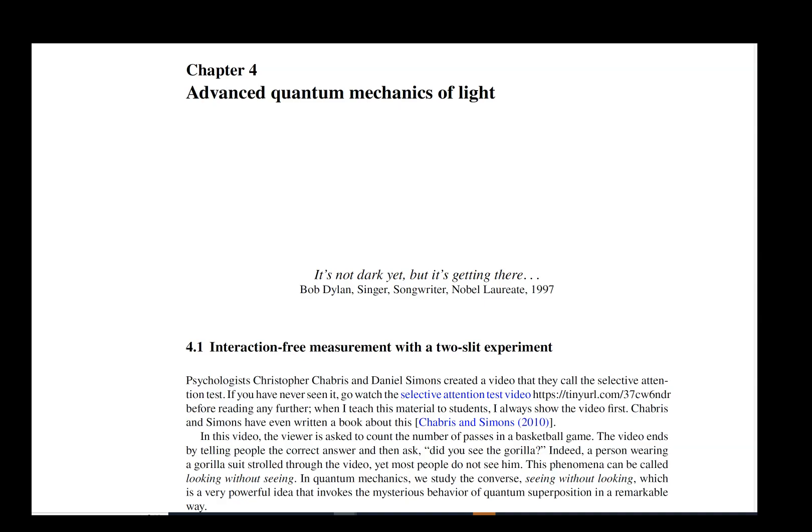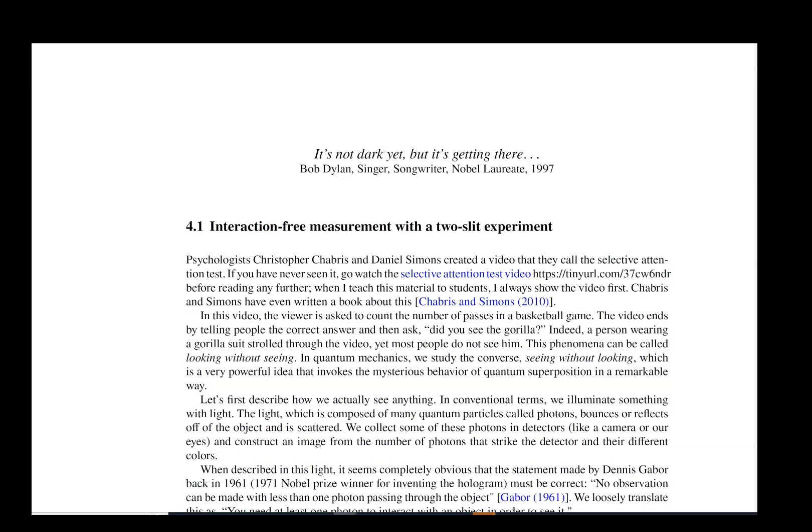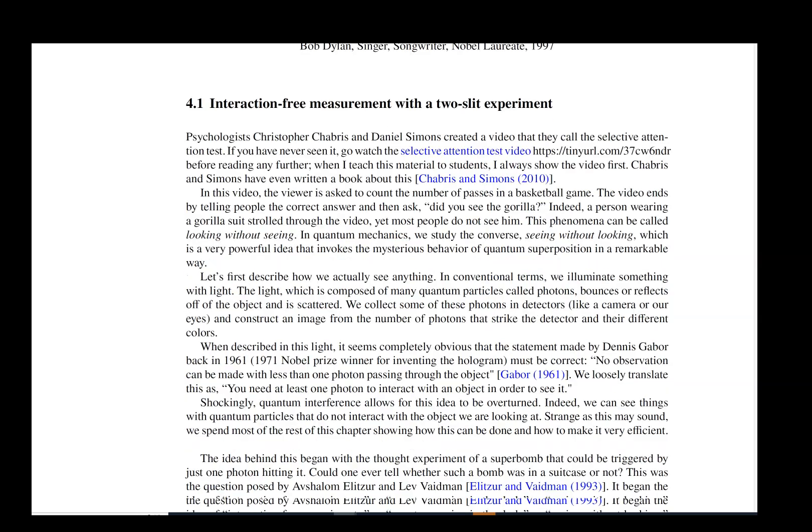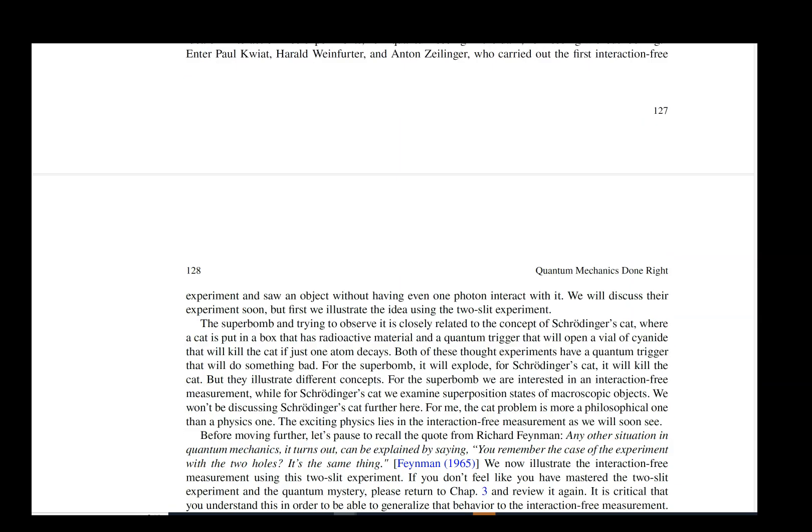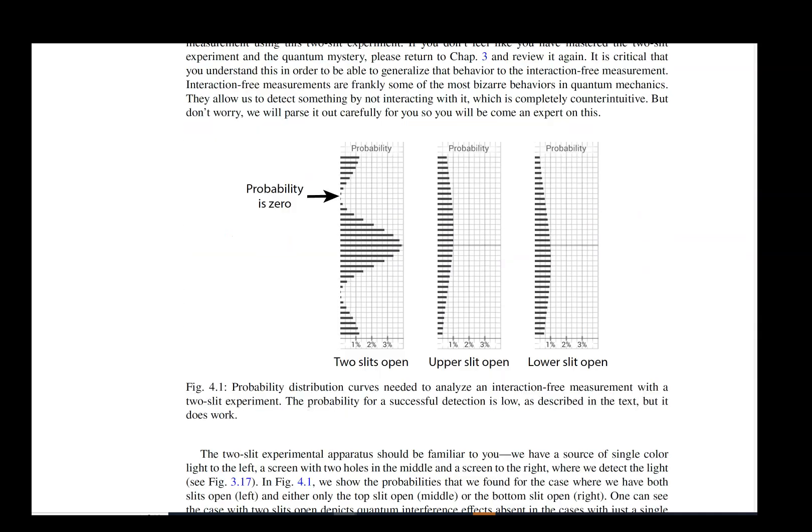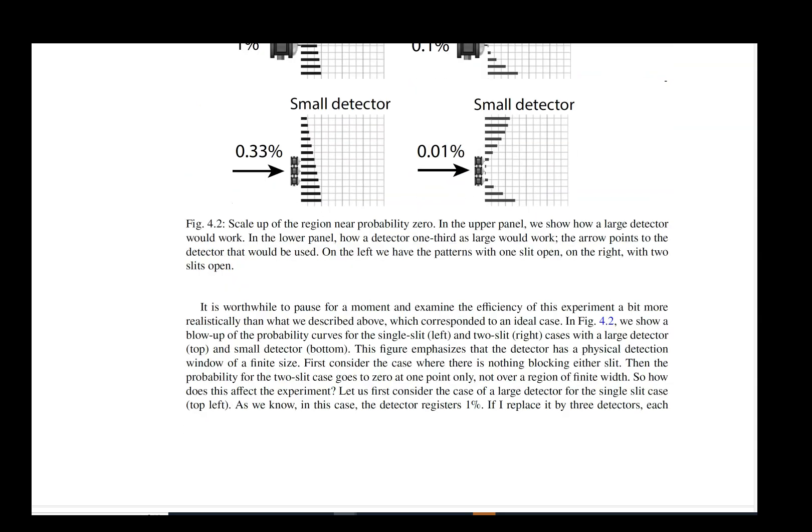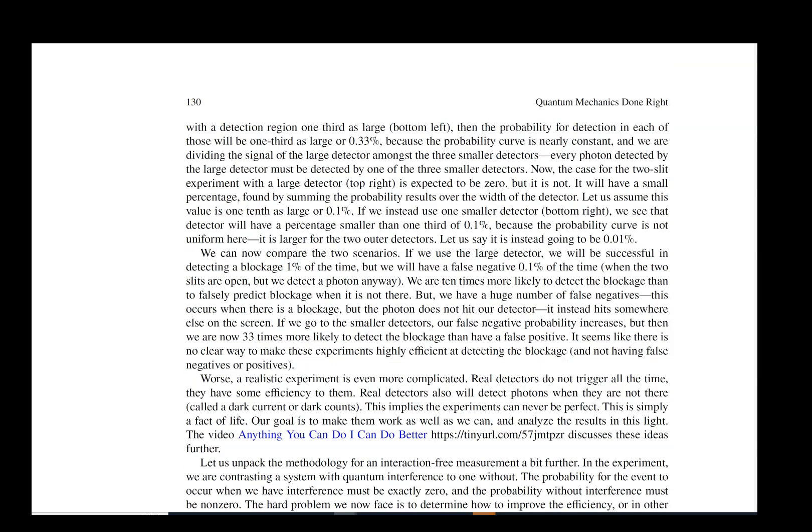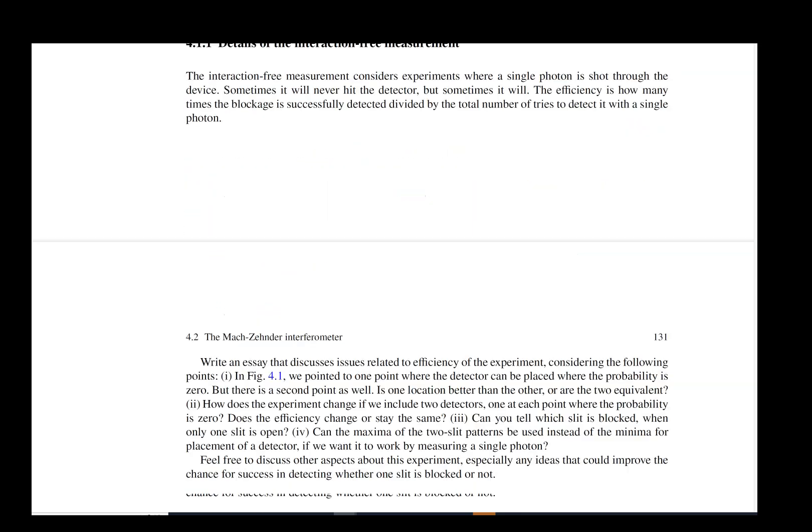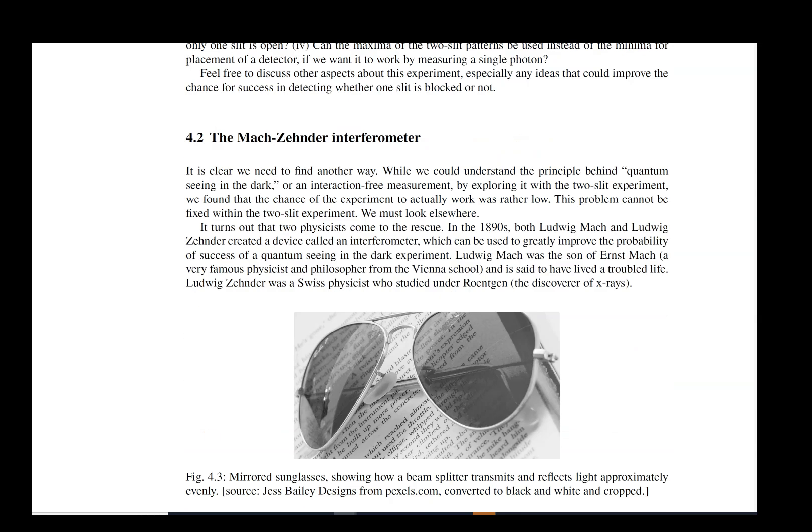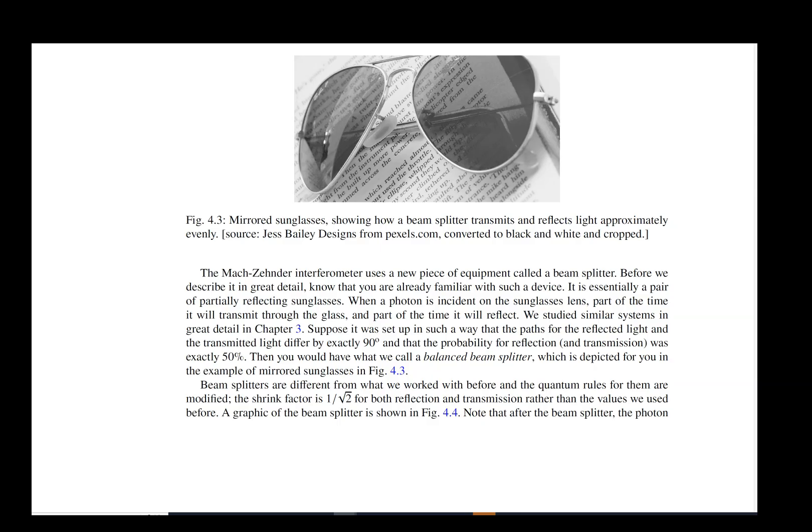We start by describing how you could use a two-slit experiment to do an interaction free measurement that entails being able to see the obstruction in one of the slits with a photon that does not actually hit the obstruction. It's an interesting idea but unfortunately incredibly inefficient. If you're lucky, maybe 0.1% of the time you can actually detect an obstruction without actually looking at it.